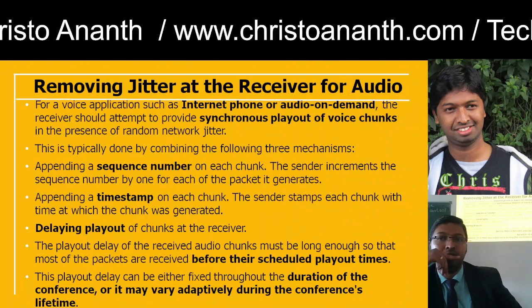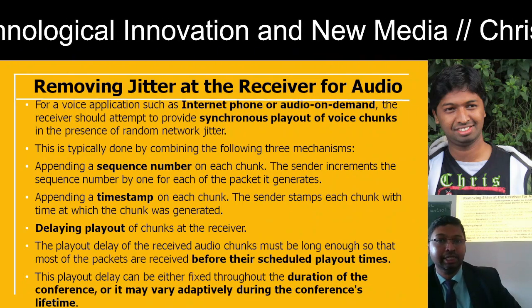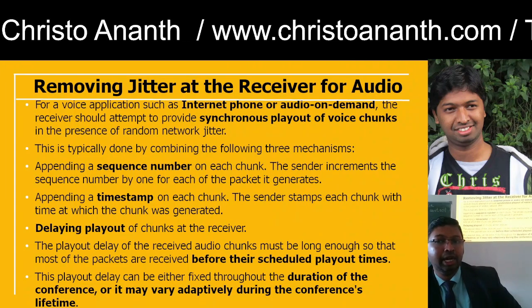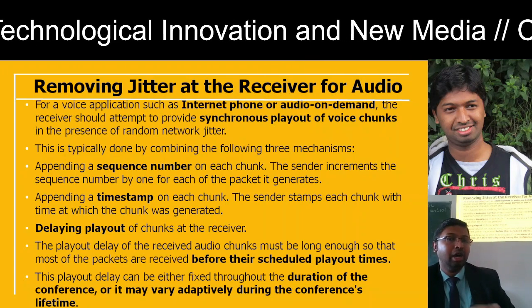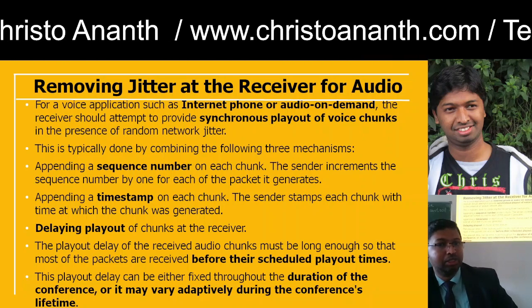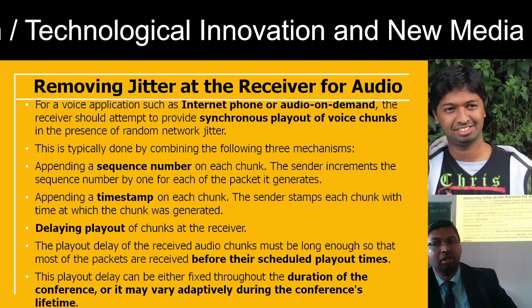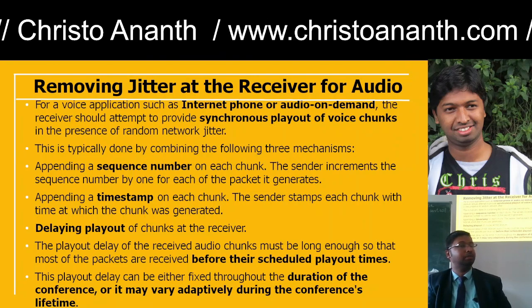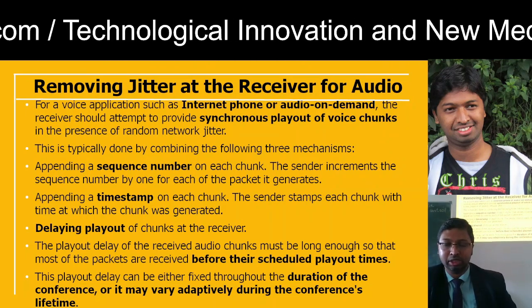For internet phone or audio-on-demand, we can use continuous playout with voice chunks to remove jitter at the receiver. We add a sequence number for each chunk, incrementing by 1 for each generated packet. We also add a timestamp for each chunk — the sender stamps each chunk with the time at which it was generated. Delaying the playout will actually remove the jitter at the receiver for the audio. We can schedule playout times using sequence numbers and timestamps.